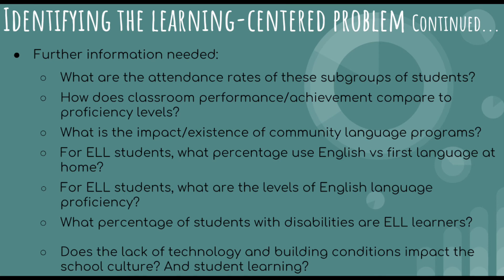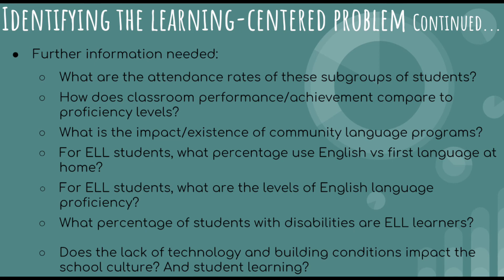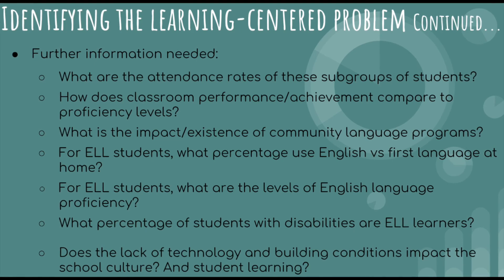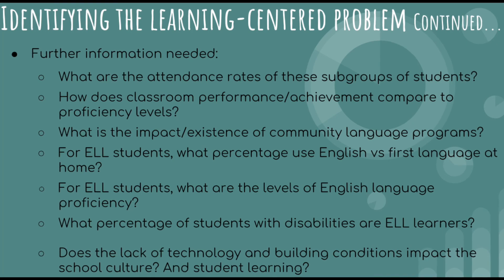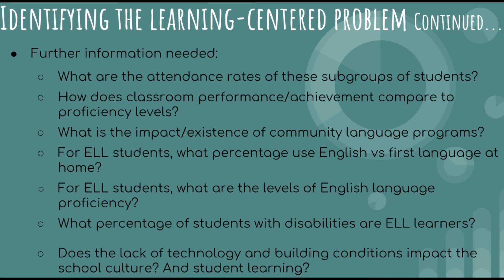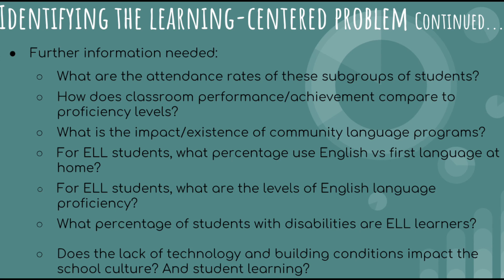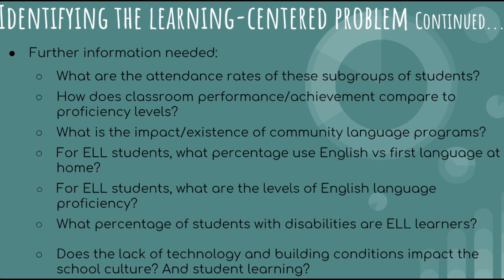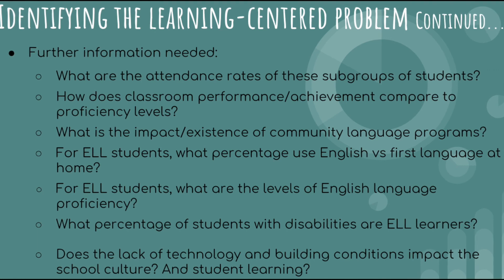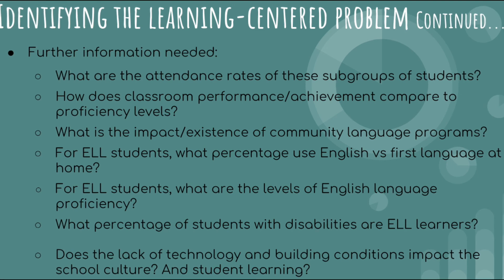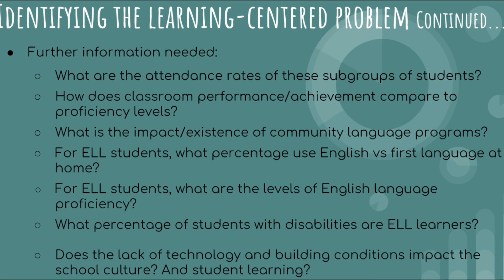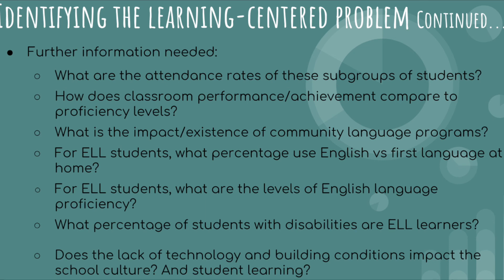Additional information is needed to fully answer these problems. What are the attendance rates for these subgroups — are they frequently absent or tardy, and what instruction are they missing? How does their classroom performance compare to proficiency levels? What is the impact of a community language program, and are ELL students offered additional English instruction for families? What percentage of English is used at home versus their first language, and what are their proficiency levels upon entering the system? We also want to know what percentage of students with disabilities are also ELL learners, and whether lack of technology and building conditions are impacting school culture and student learning.